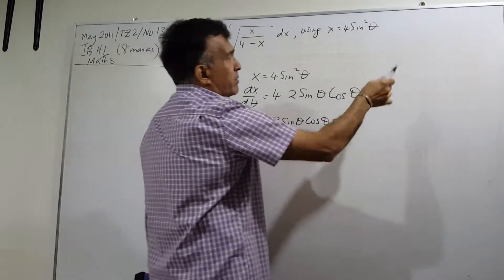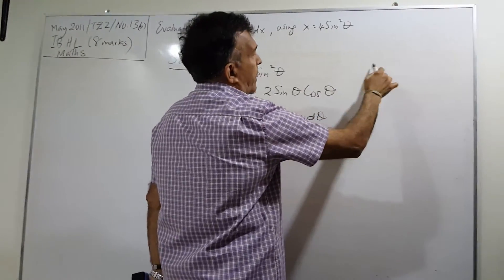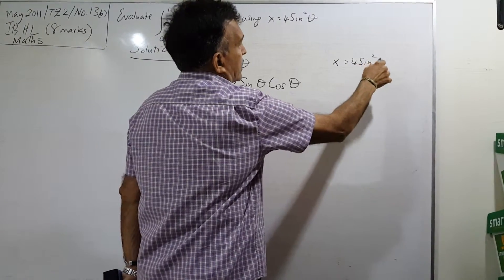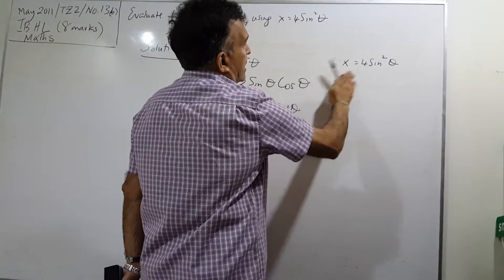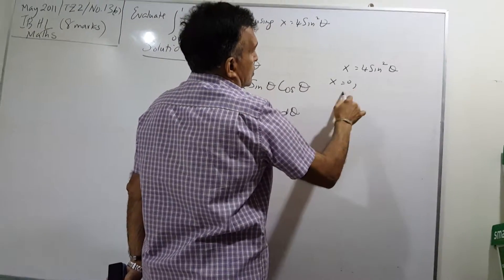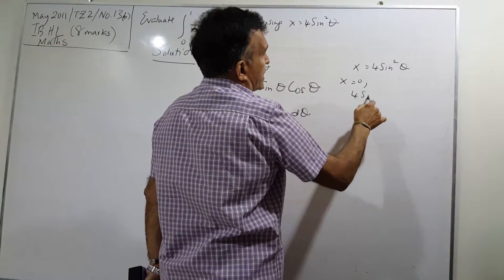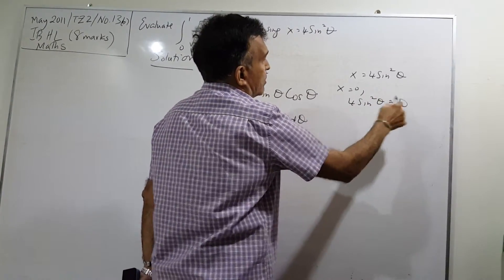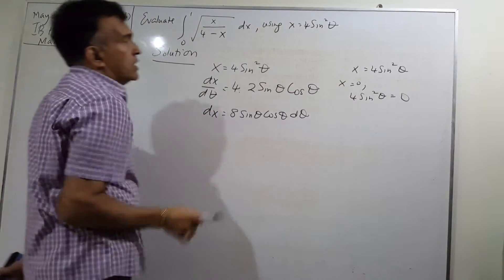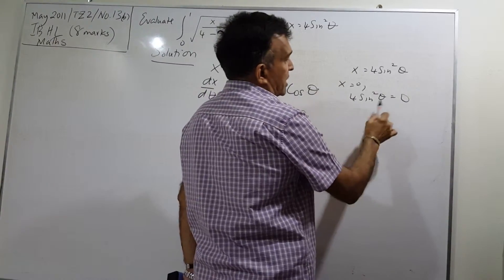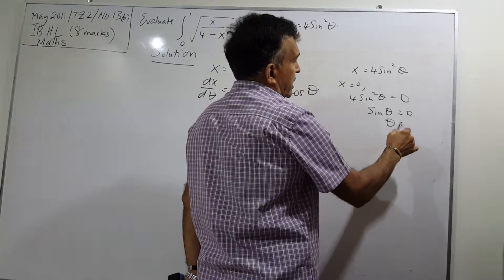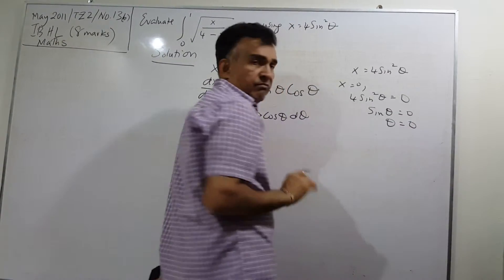Now let's deal with the limits. Since x equals 4 sine squared theta, for the lower limit x equals 0, we get 4 sine squared theta equals 0, so sine theta equals 0 and therefore theta equals 0.